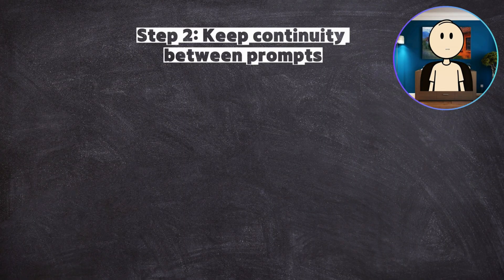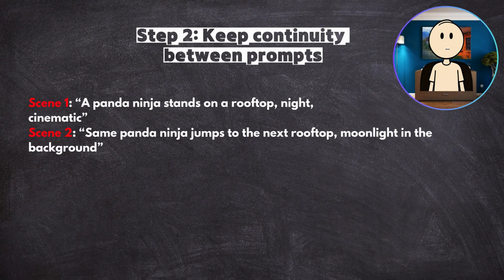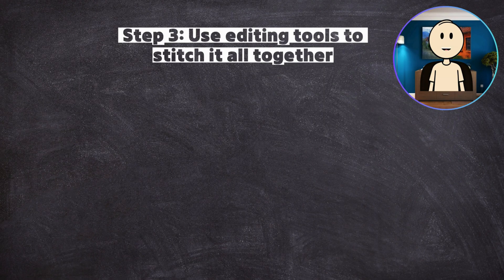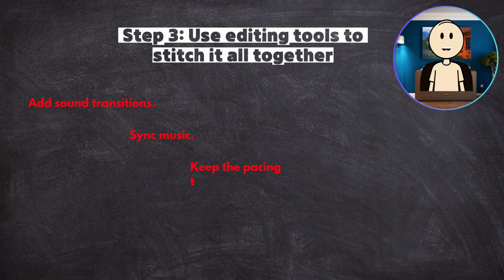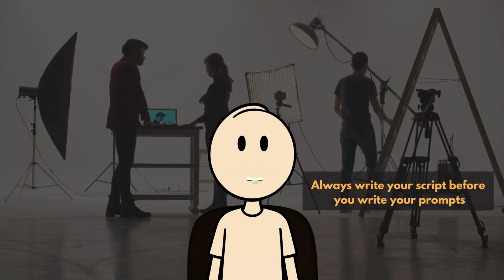Keep continuity between prompts. Use the same character, environment, and style across all clips. Example — Scene one: a panda ninja stands on a rooftop, night, cinematic. Scene two: same panda ninja jumps to the next rooftop, moonlight in the background. Scene three: close up of the panda's face, breathing heavily, camera shakes slightly. This makes your story feel connected even if it's built from separate clips. Step three: use editing tools to stitch it all together. Once you've got three or four short clips, use simple tools like CapCut, Canva, Premiere Rush, or even TikTok Editor to add sound transitions, sync music, keep the pacing tight, and add text or dialogue. Always write your script before you write your prompts.